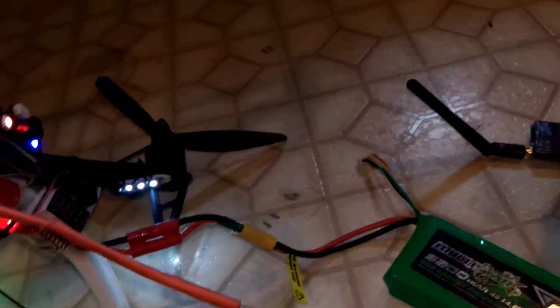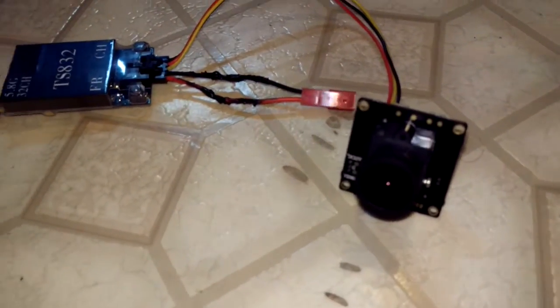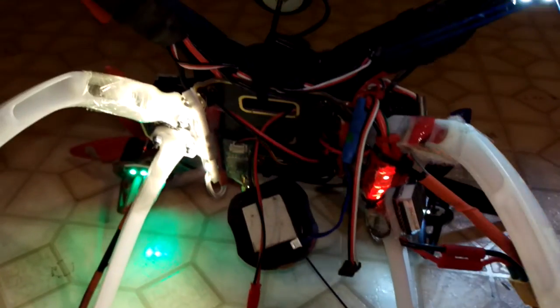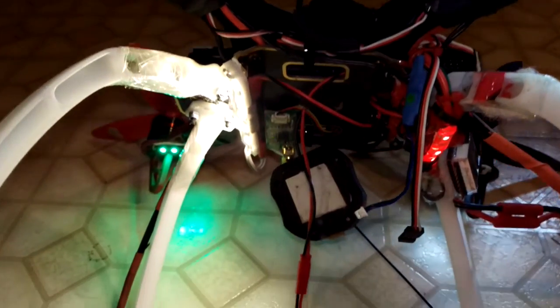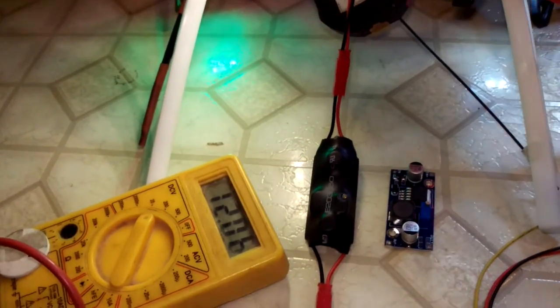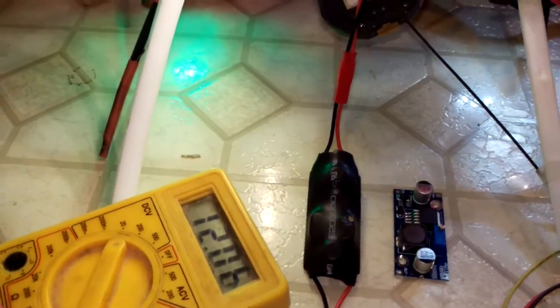And this little puppy, this 330, runs on 4S. The transmitter I have will take it, but the camera could only take 12, so yeah, this buck step down is gonna work just nicely for me.